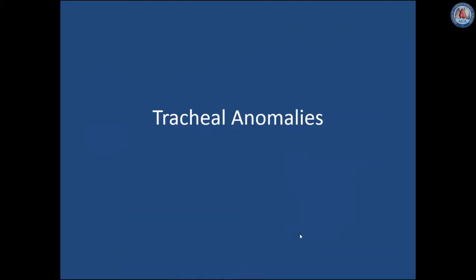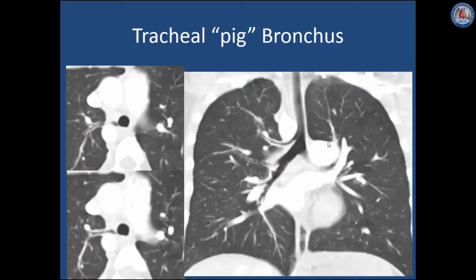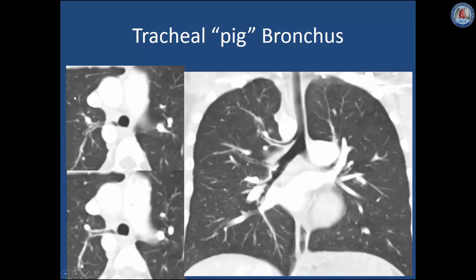There are some tracheal anomalies that we should be familiar with. The most common is the tracheal bronchus, otherwise known as the pig bronchus — a small bronchus that usually arises from the distal right lateral wall of the trachea, 2 to 3 centimeters above the carina, supplying a portion of the right upper lobe. A normally located right upper lobe bronchus will also be seen arising from the right main bronchus. On axial images we can see the small tracheal bronchus coursing into the right upper lobe. This has clinical implications in patients who will be intubated so that this bronchus is not occluded.